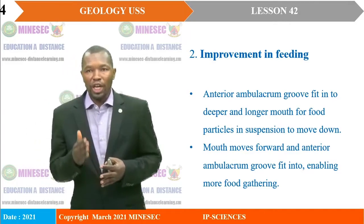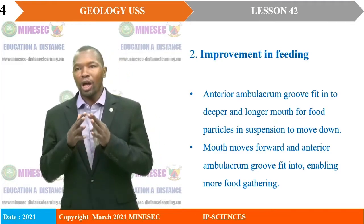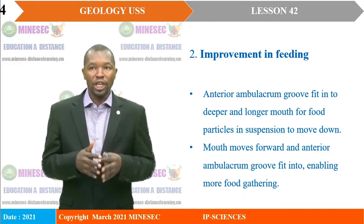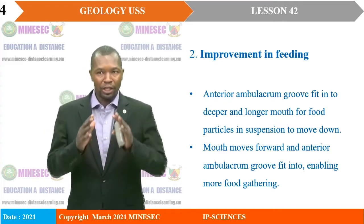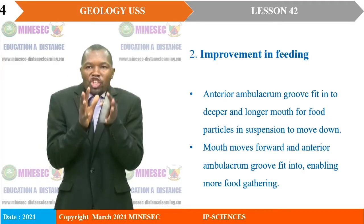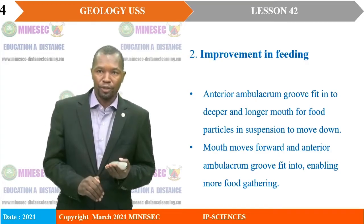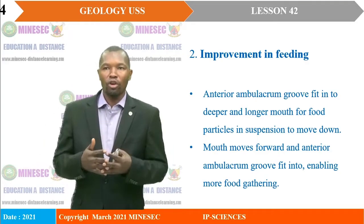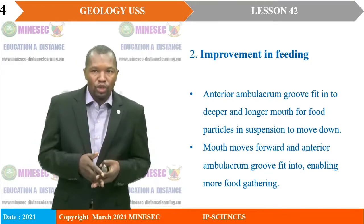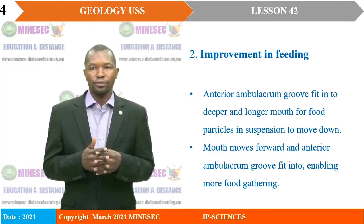The second significance is the improvement in feeding habits. The anterior ambulacrum growth fits into the deeper and longer mouth, allowing food particles in suspension to move down. This positioning helps the organism stay away from a lot of surface activities. Fine material in suspension drops and assists in the feeding of the organism. The mouth moves forward and the anterior ambulacrum growth fits into it, enabling the gathering of food.